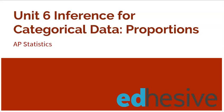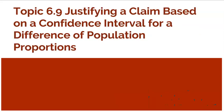Welcome to Unit 6, Inference for Categorical Data on Proportions. In this video, we're going to tackle Topic 6.9, Justifying a Claim Based on a Confidence Interval for a Difference of Population Proportions.